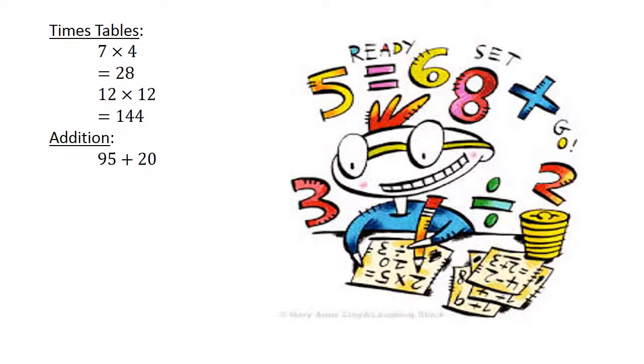Addition: 95 plus 20 equals 115. Subtraction: 73 minus 26 equals 47.